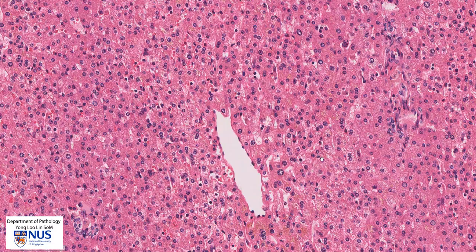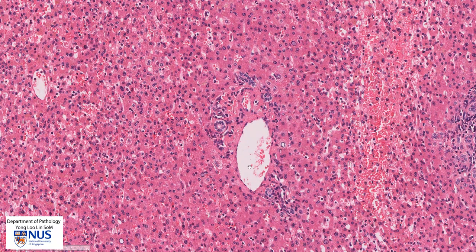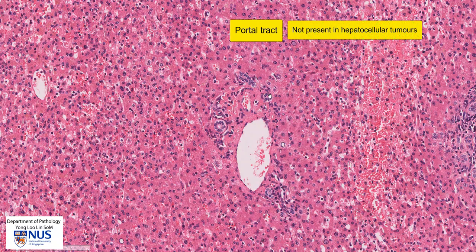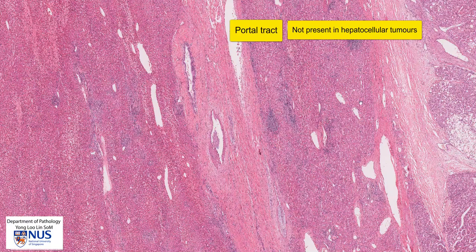The NC ratios are fairly low. Here we can appreciate a portal tract where there is the portal vein, the artery, and small bile ducts. We will see portal tracts within non-neoplastic liver, whereas we will not find portal tracts in liver cancer or liver tumors. Let's move over to the area of the tumor.